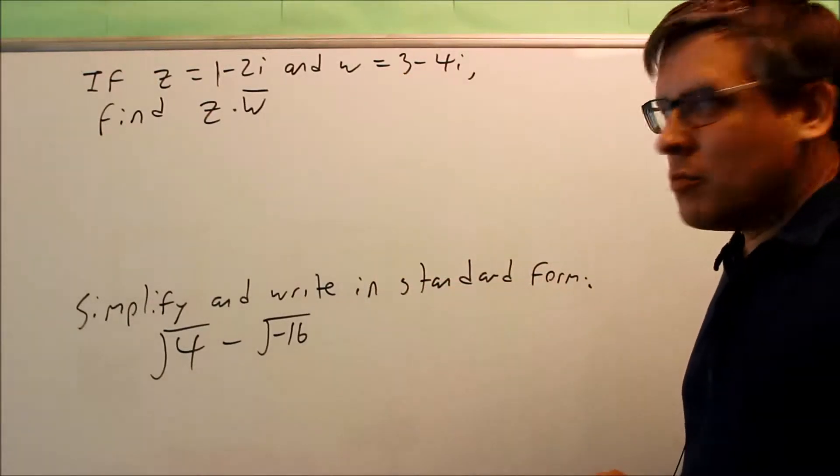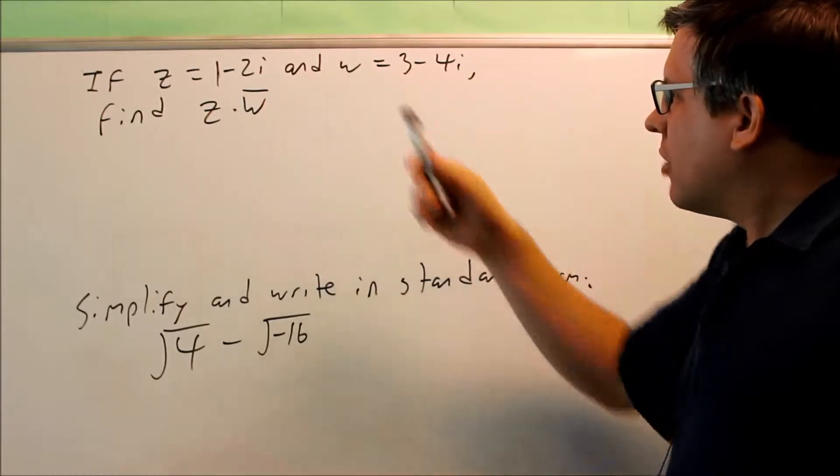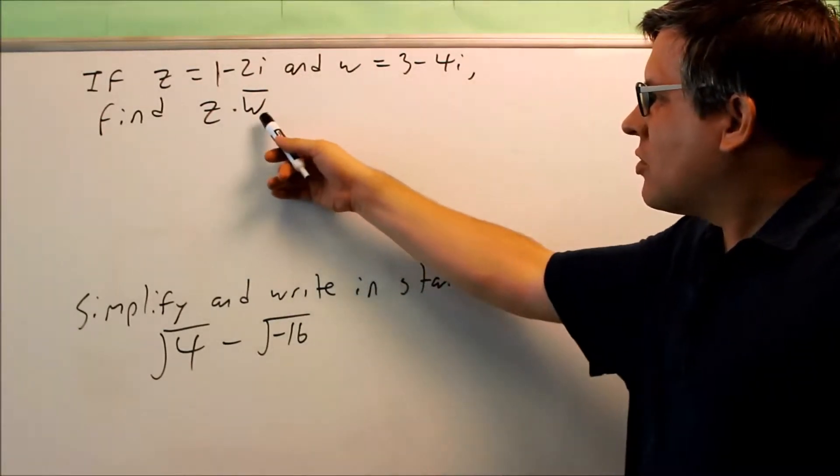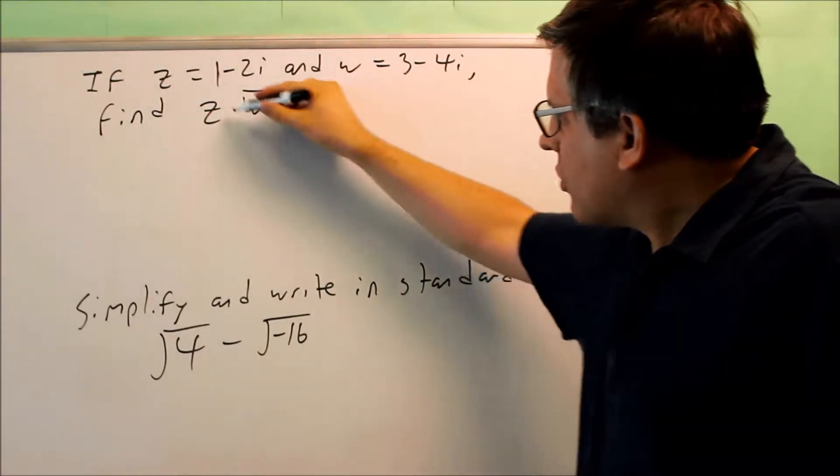Okay, we want to do these two problems. If z equals 1 minus 2i and w equals 3 minus 4i, find z times... Okay, now we have a w with a bar atop, so we have to know what this notation means.